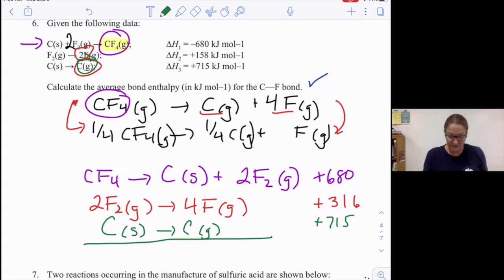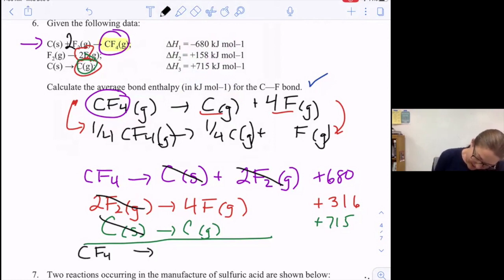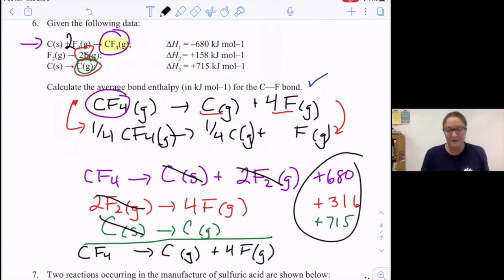Okay. Now taking a look at what cancels. Carbon solid, gone. F2s on each side, gone. So now when I add this up, I have CF4 becomes carbon gas plus 4Fs gaseous form. I'm going to add those up. 680 plus 316 plus 715 gives me a total of positive 1711.